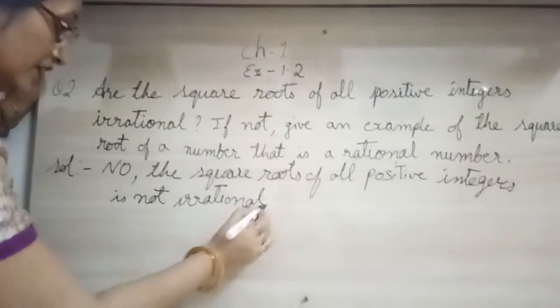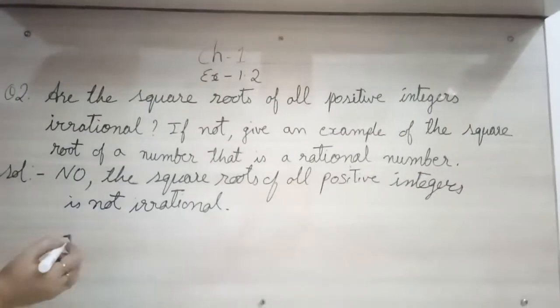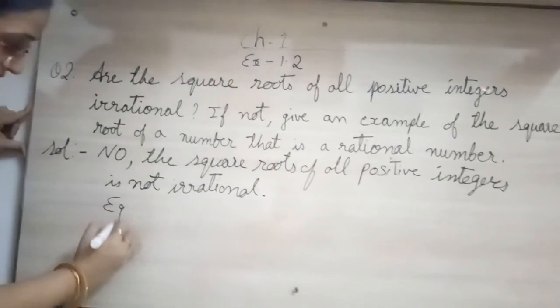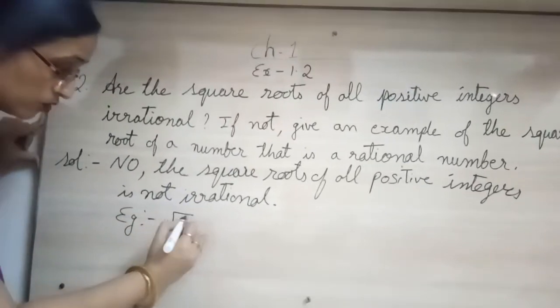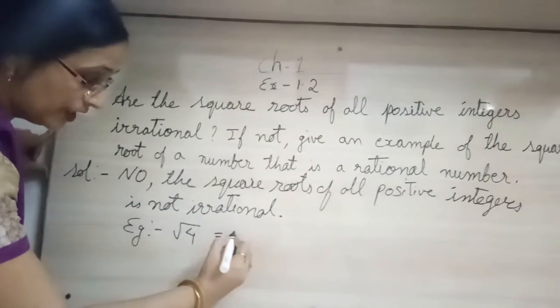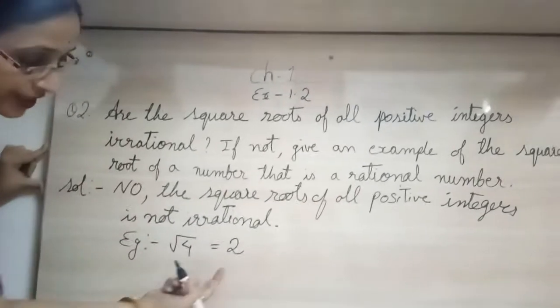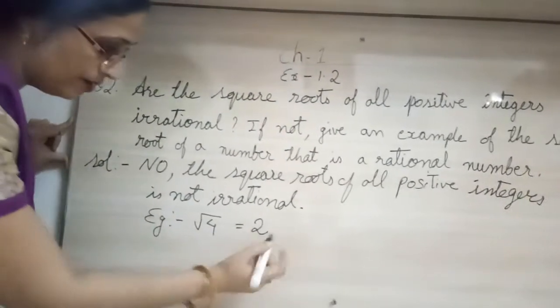Given example: suppose I take square root of 4. So when I solve, my answer will come 2, and 2 is not an irrational number, it is a rational number.